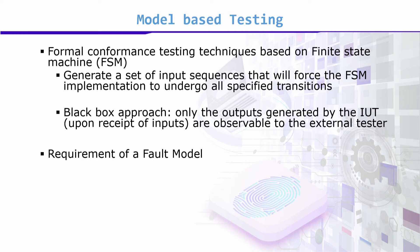Testing techniques are based on several system models. One of them is the finite state machine, where we generate a set of input sequences that will force the FSM implementation to undergo all specified transitions. What we check is whether the implementation under test — the system under test — conforms to what was conceived in the model. It is definitely a black-box approach. Only the outputs generated by the IUT upon receipt of inputs are observable to the external tester. The first input or action or condition is what the test would call expected output — input, call graph, or MM path output.